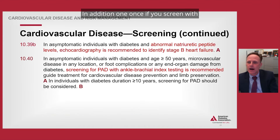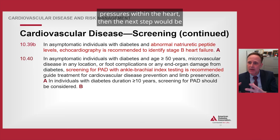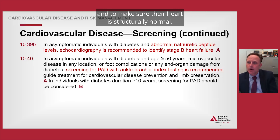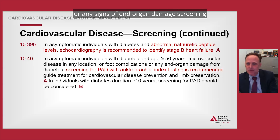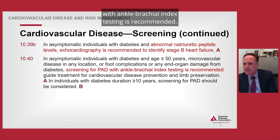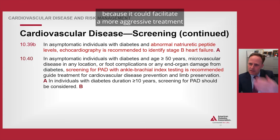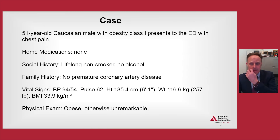This natriuretic peptide screening is a new recommendation — if BNP or NT-proBNP is abnormal, indicating elevated filling pressures within the heart, the next step would be an echocardiogram to confirm cardiac structure is normal. Additionally, in people who are asymptomatic with diabetes aged above 50 who have microvascular disease, foot complications, or any signs of end organ damage, screening for peripheral artery disease with ankle-brachial index testing is recommended. This can facilitate more aggressive treatment of risk factors and prevent progression to symptomatic peripheral artery disease.